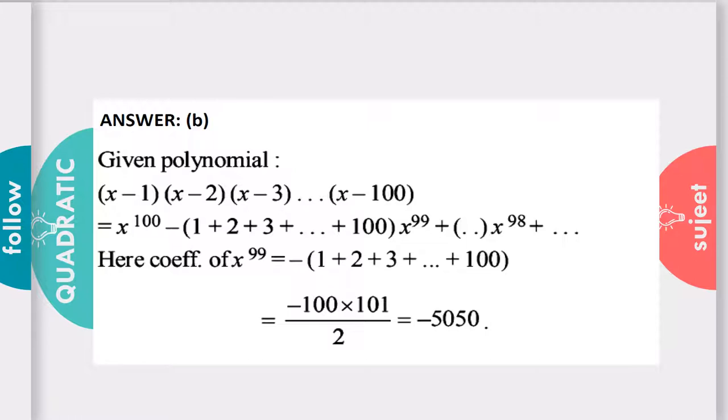As we know, the summation of natural numbers sigma n is n(n+1)/2, and so this is the formula. n is 100, so 100 times (100+1), which is 101, divided by 2. We will get the answer -5050. This is our answer.